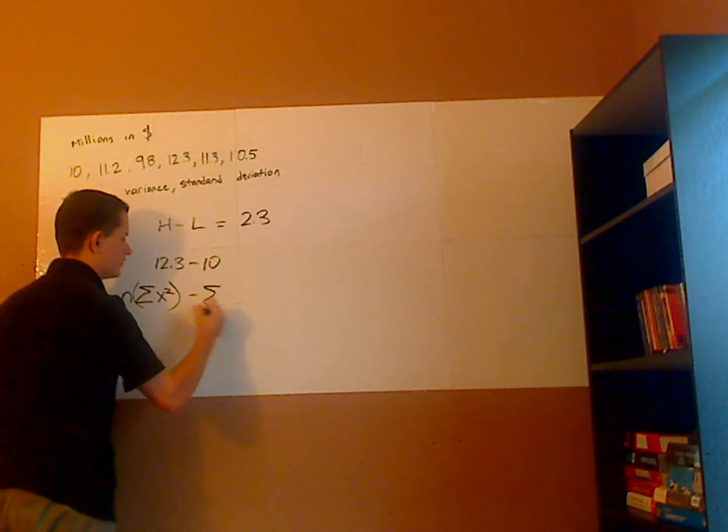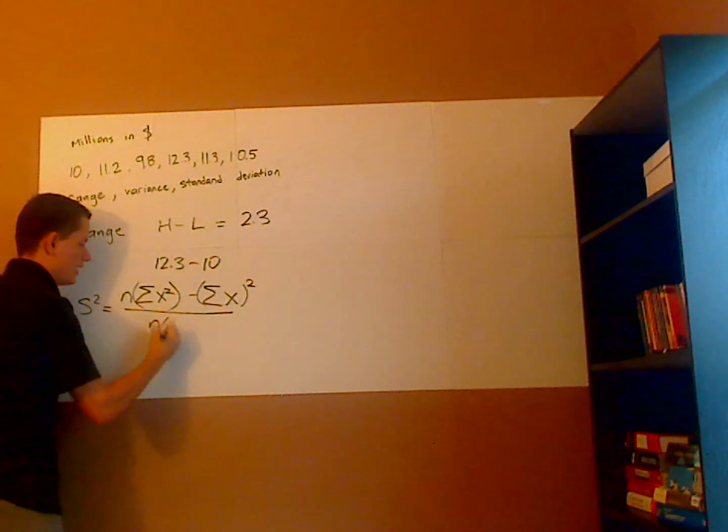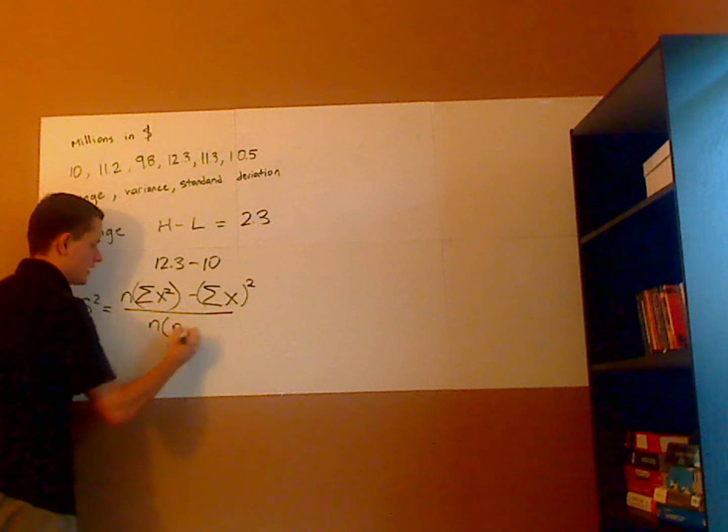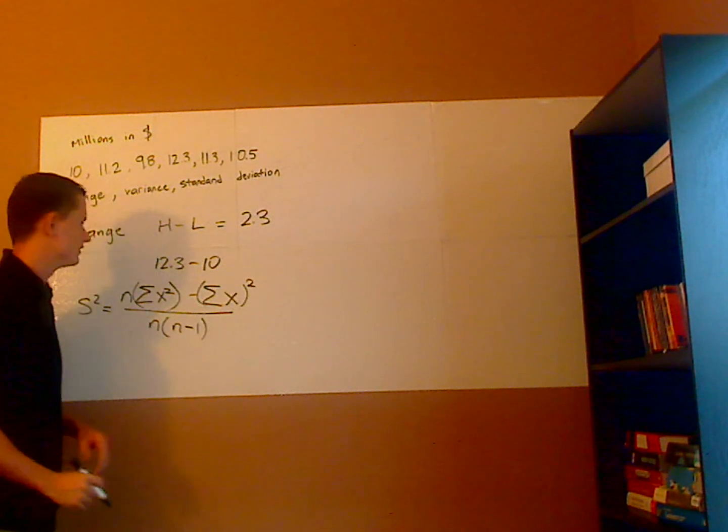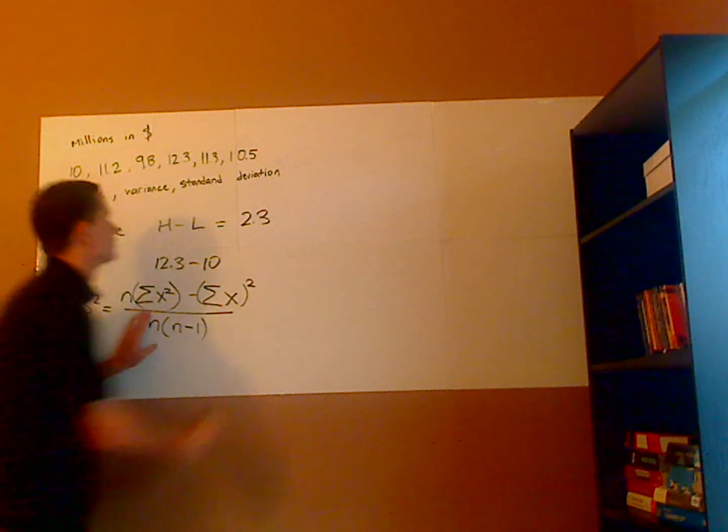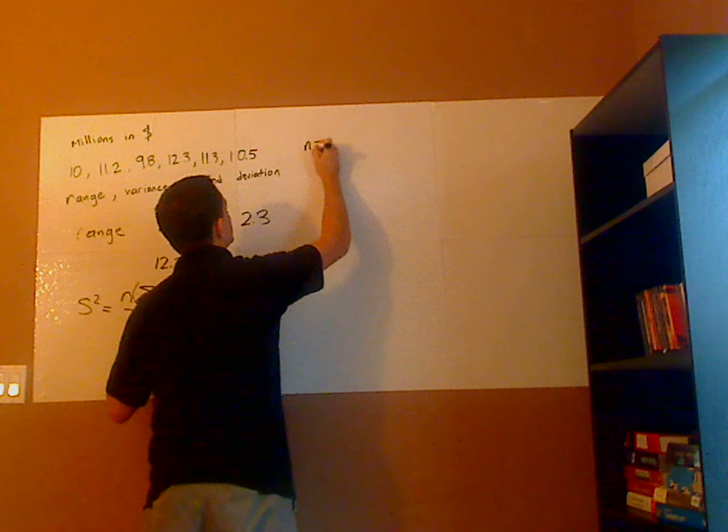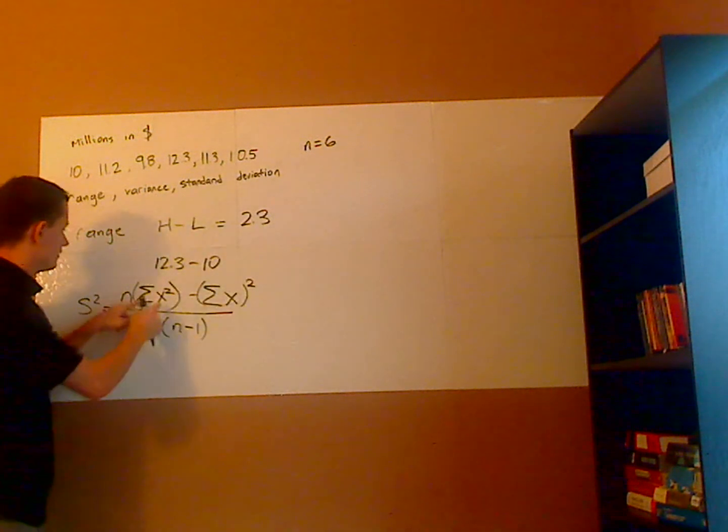The formula is n times the square root of x squared, the square root of x squared over n times n minus one. Put the n minus one in parentheses. So this is the formula.